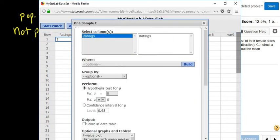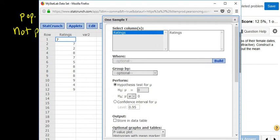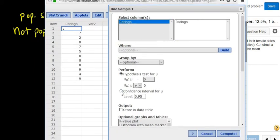Click ratings because that's the name of the column where the ratings are. And select confidence interval. It was 95% in the problem, so we leave it at 0.95. Then just click compute.